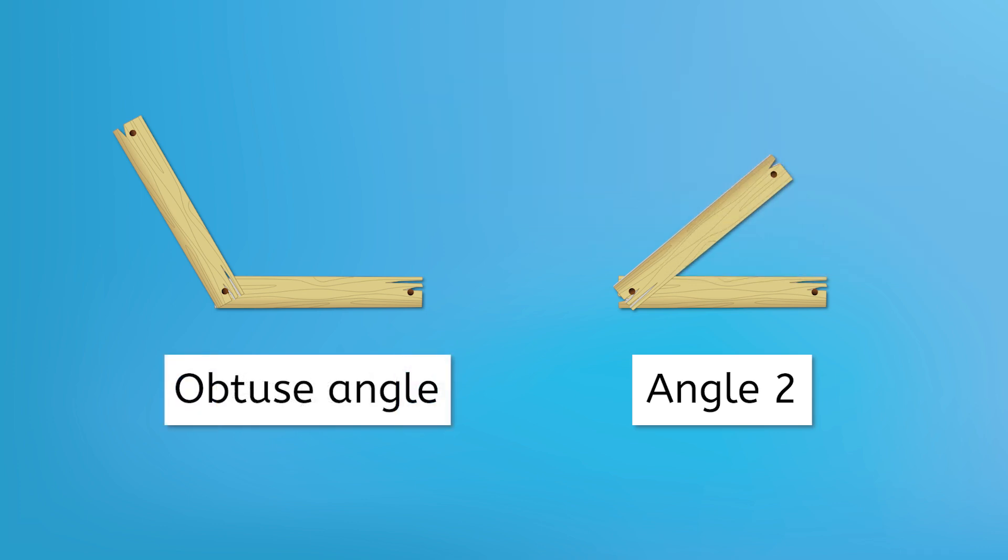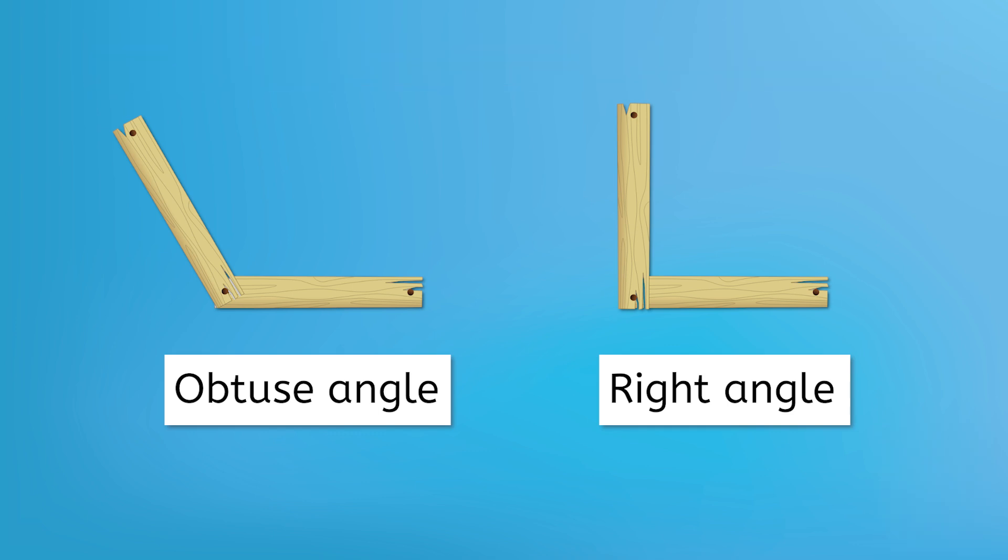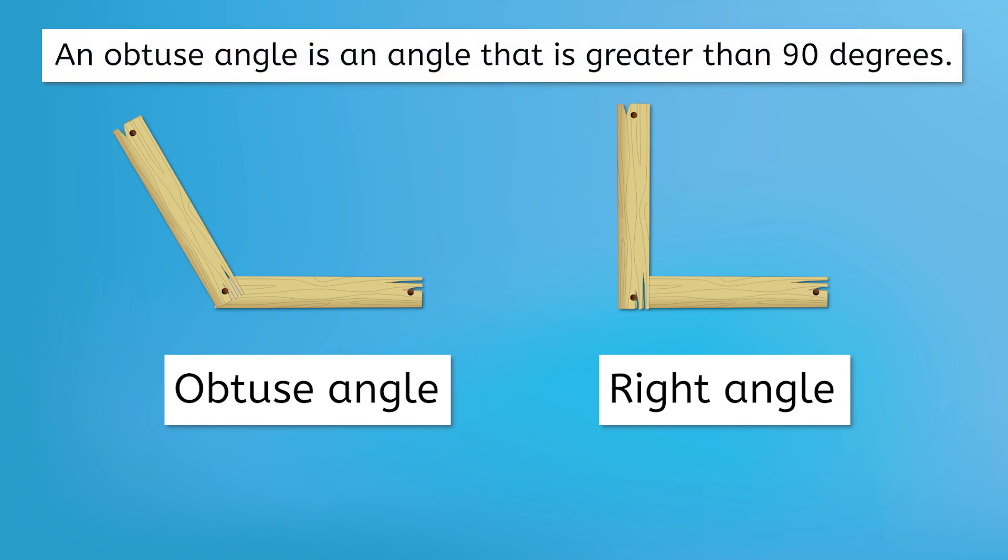Angle one is called an obtuse angle. Look at it compared to the 90 degree right angle. How do you think we could define obtuse angle? Write your definition in your guided notes. Well, the obtuse angle is definitely more open than the right angle. If we fit the corner of our paper in there, we have extra space left over. That means an obtuse angle is an angle that is greater than 90 degrees.